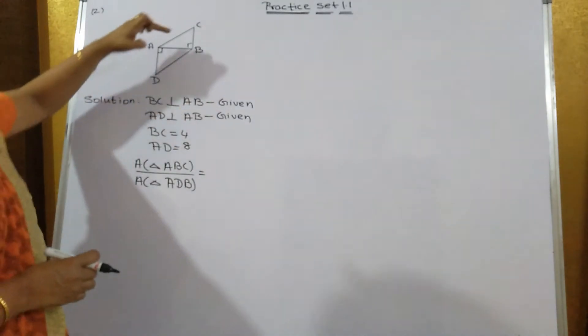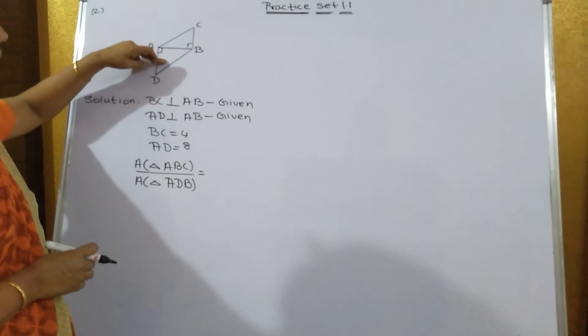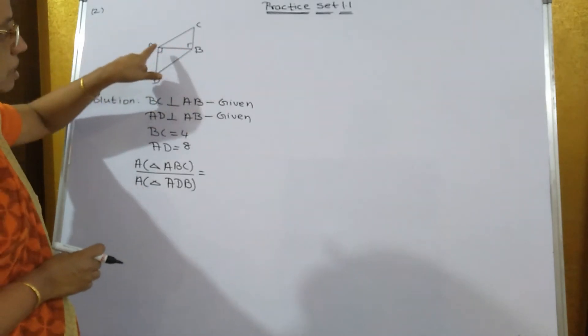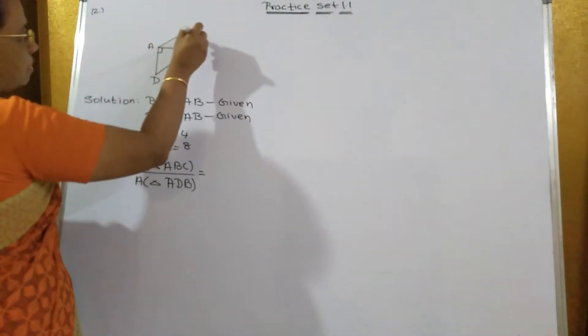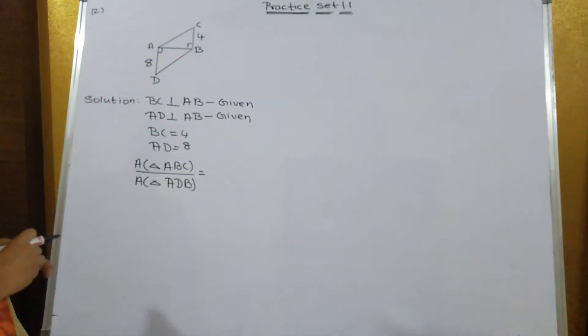There are two triangles, one is the upper ABC and one is the lower ADB. The base is the same for both the triangles and value of BC is equal to 4 and AD is equal to 8 and we have to find out the area of triangle,